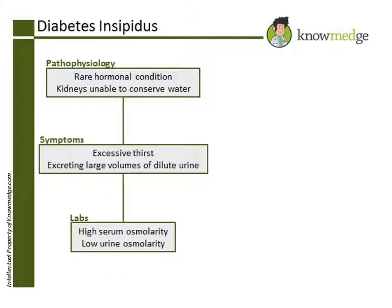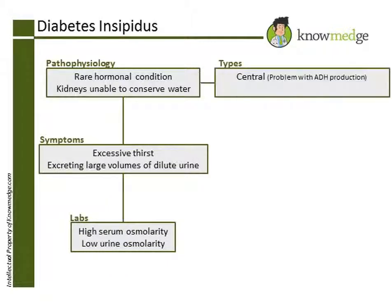Diabetes insipidus has two forms: central and nephrogenic. Central DI is associated with a problem with the production of antidiuretic hormone, ADH. Nephrogenic diabetes insipidus is associated with a problem with the kidneys' response to ADH.